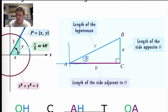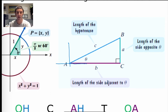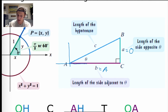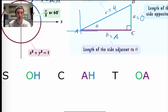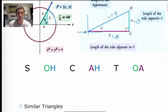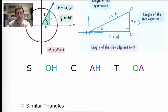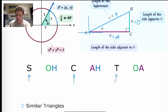We've got our opposite side length — in this case lowercase a — our adjacent side length, the side next to our reference angle, which is b, and the hypotenuse is c. I label the opposite side with capital O, adjacent with capital A, and the hypotenuse with capital H. The S stands for sine, C for cosine, and T for tangent.